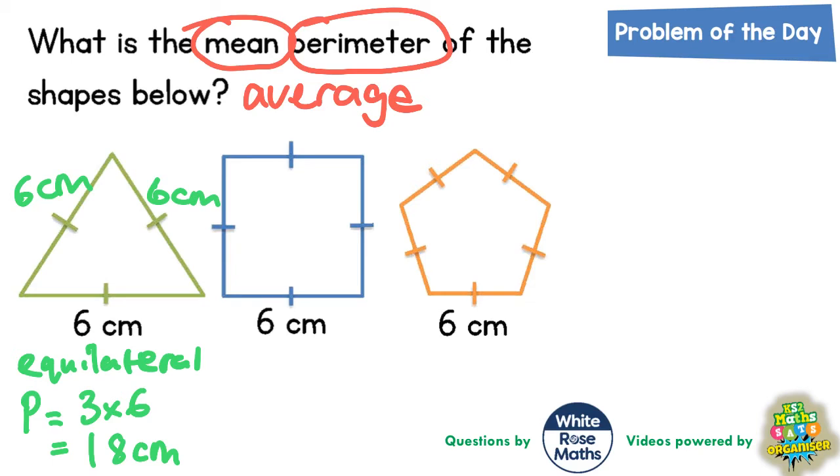The blue shape looks like a square and we know that it is a square because of these dashes on the shape. All four sides are equal. If the bottom side is six, then all four sides are going to be six. So the perimeter is four times six, and that is 24 centimeters.